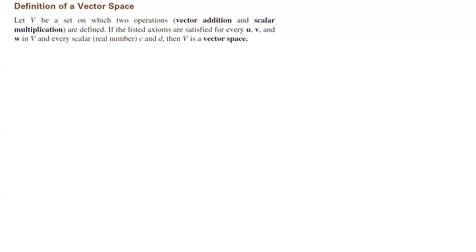Remember we talked about vector space. Suppose V is a set with two operations: vector addition and scalar multiplication. These two operations are defined for this set. If the listed axioms are satisfied for every u, v, and w in set V, and every scalar or real number c and d, then you have a mathematical object defined as a vector space.